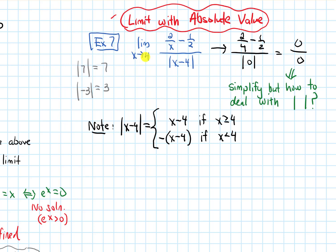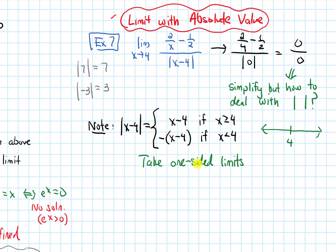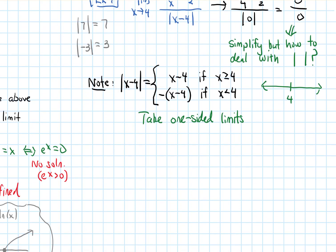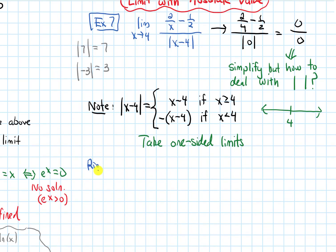We want to find the limit as x approaches 4. But depending on which side of 4 we're on — the right-hand side corresponds to the top piece of the piecewise function, and the left-hand side corresponds to the bottom piece. So we need to take one-sided limits to handle that absolute value, since we know how to eliminate it once we know whether x is greater than or equal to 4 or less than 4. Let's do the right-hand limit first, then the left.